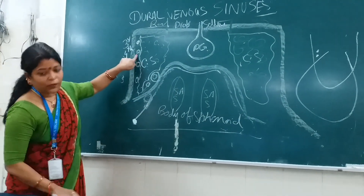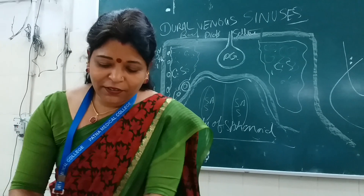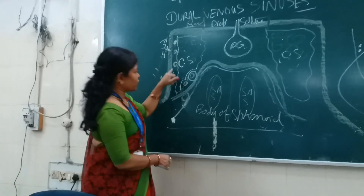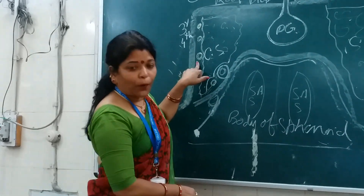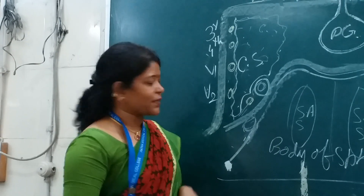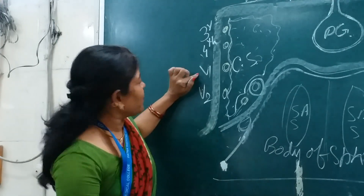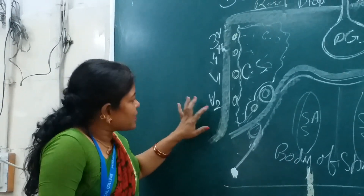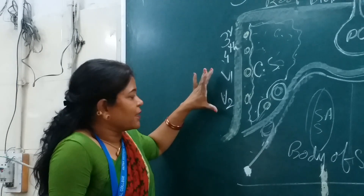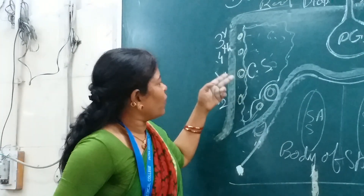The third cranial nerve and the fourth cranial nerve are in the lateral wall. Then you must note there are three parts of the trigeminal nerve. Three divisions together. Then why only two here? Starting from the ophthalmic - V1 - and the second, which is the maxillary nerve V2. That means the third, fourth, and two divisions of the fifth cranial nerve - the ophthalmic and the maxillary - are closely related with the lateral wall of the cavernous sinus.